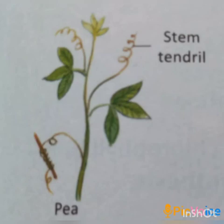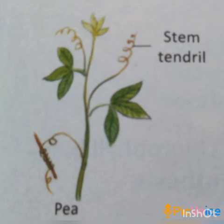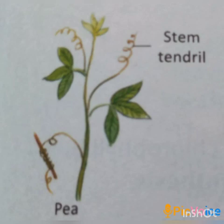The next modification is a stem that provides support. Some plants like grapes and pea have a very weak stem. Since they cannot stand upright, they are supported by thin, long, spring-like structures called tendrils that grow from the stem. Tendrils coil around some external support such as a pole or a branch of a tree and support the plant. In this case the stem is modified to provide support to the plant.